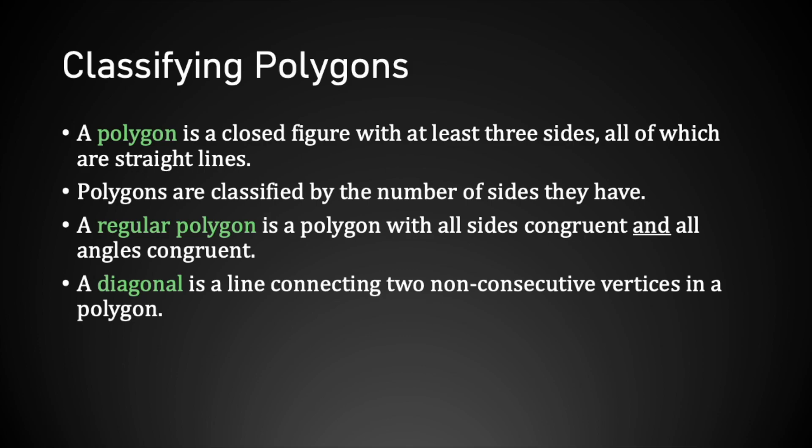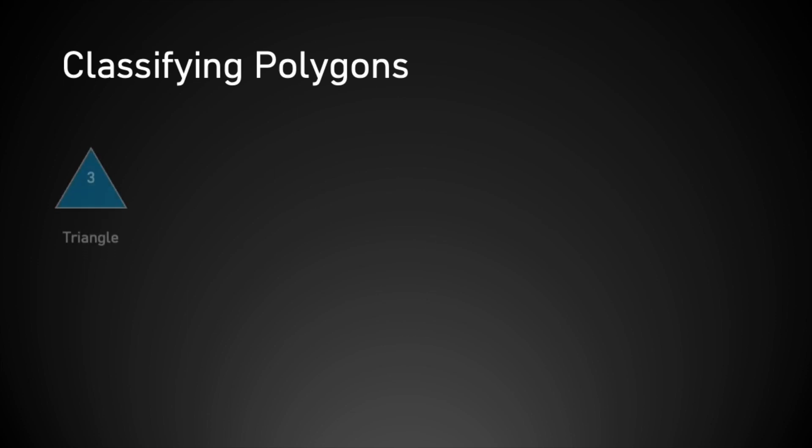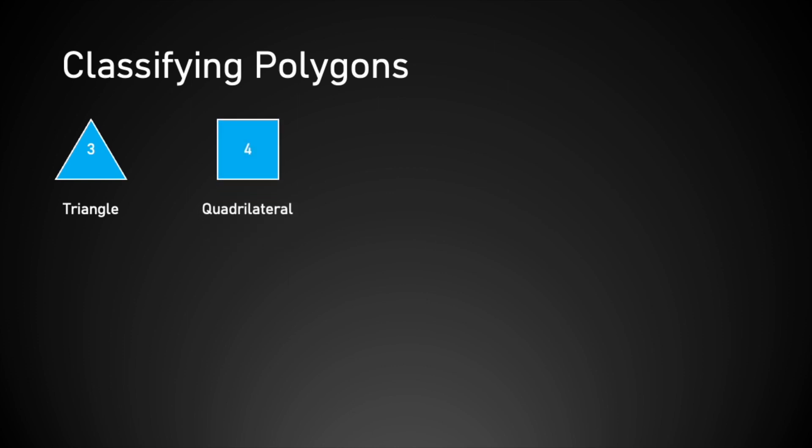So polygons are classified by the number of sides they have. A polygon with three sides is called a triangle — the tri prefix comes from the Latin word for three. A polygon with four sides is called a quadrilateral. The quadri prefix is the Latin word for the number four, and lateral comes from the Latin word meaning side, so it literally means four sides.